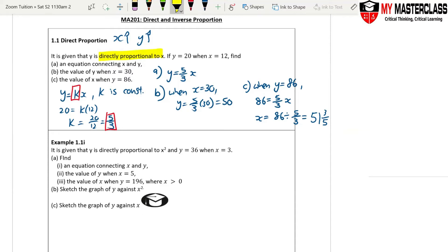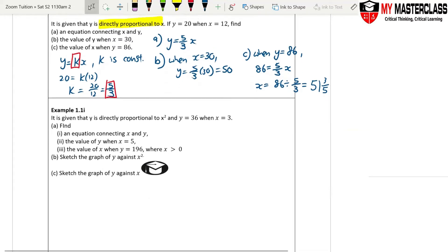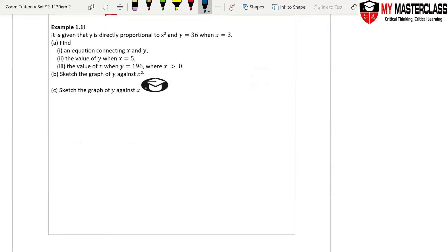So direct proportion, very straightforward. Next one. It is given that y is proportional to x square. What should you write? y equals kx², because it's proportional to x square. Must always say that k is a constant.